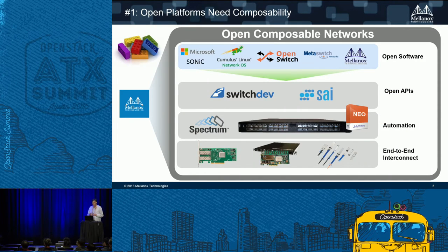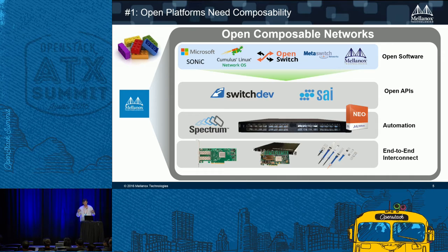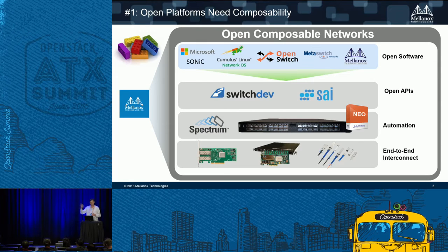We call this Open Composable Networks. Open platforms need composability. One of the key things we've been able to do is take our hardware and build standard APIs on top of that. Two APIs I want to highlight for our Ethernet switch: the first is called switchdev, which is part of Linux, and the second is called SAI — the Switch Abstraction Interface — defined in the OpenCompute project. Both are standard APIs. Just as when you write an application to a NetDev interface, you don't care whether it's a Mellanox, Broadcom, or Intel NIC — the vendor supplies a driver that conforms to that API.